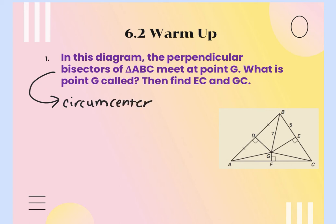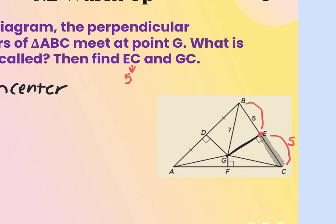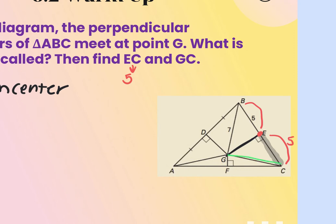The circumcenter theorem says that from that point to each vertex would be congruent. So if I look at this triangle and I want to find EC — that's part of the side. EG is a perpendicular bisector, so it meets that side at a 90-degree angle at the midpoint. So E is the midpoint, meaning if BE is 5, then EC is also 5. And GC, which connects the circumcenter to the vertex, equals 7 by the theorem.